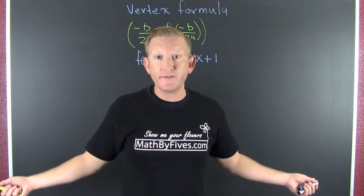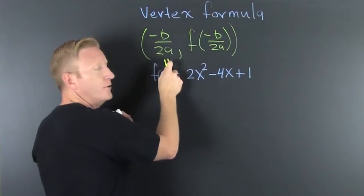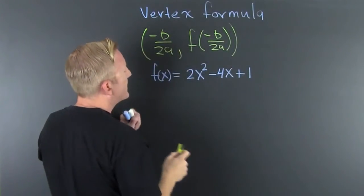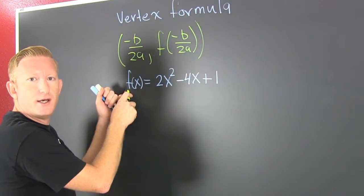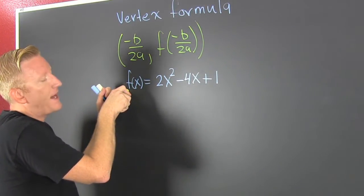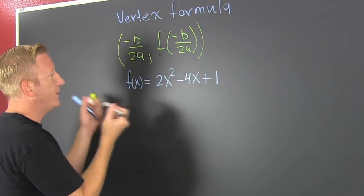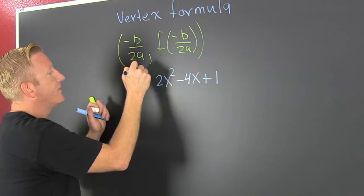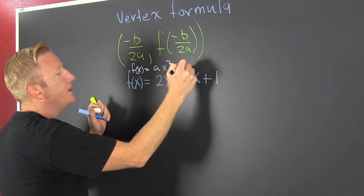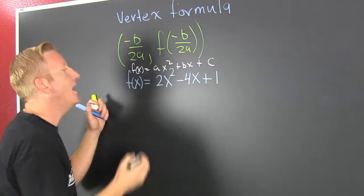Let's find the vertex using the vertex form — see another video for that magic formula. We're looking at the vertex of a parabola. The parabola has a low point or a high point, a max or a min. This function is of the form f(x) = ax² + bx + c.